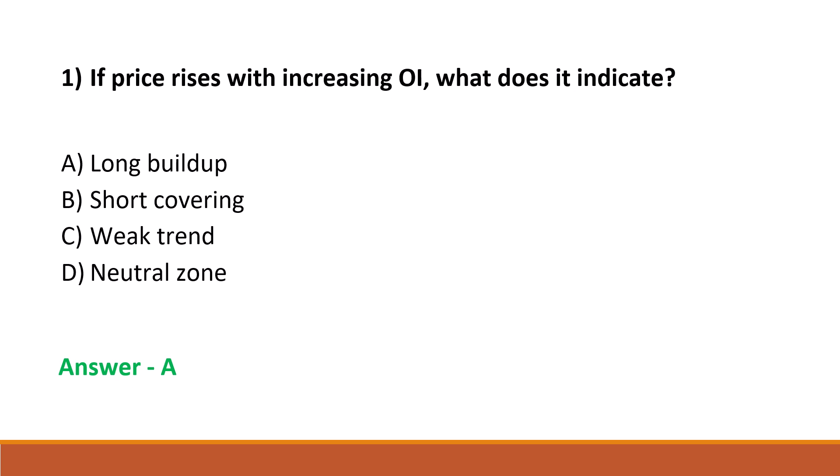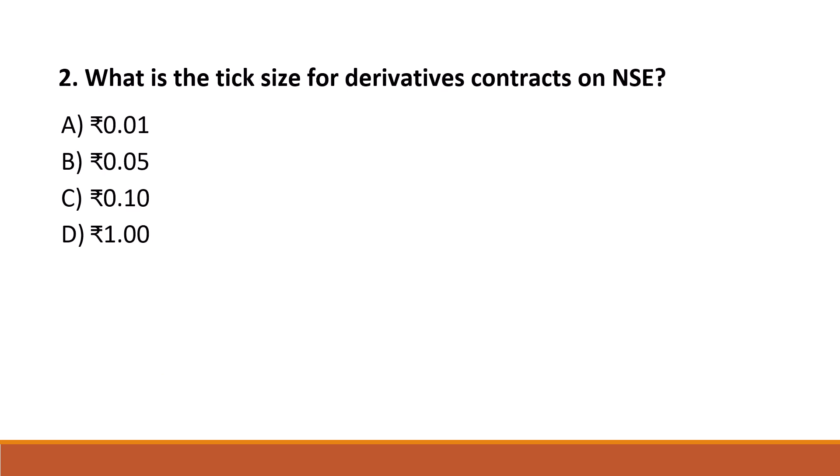Next question: what is the tick size for derivatives contracts on NSE? Option A: 0.01. Option B: 0.05. Option C: 0.10. Option D: 1. The correct answer is Option B, 0.05.